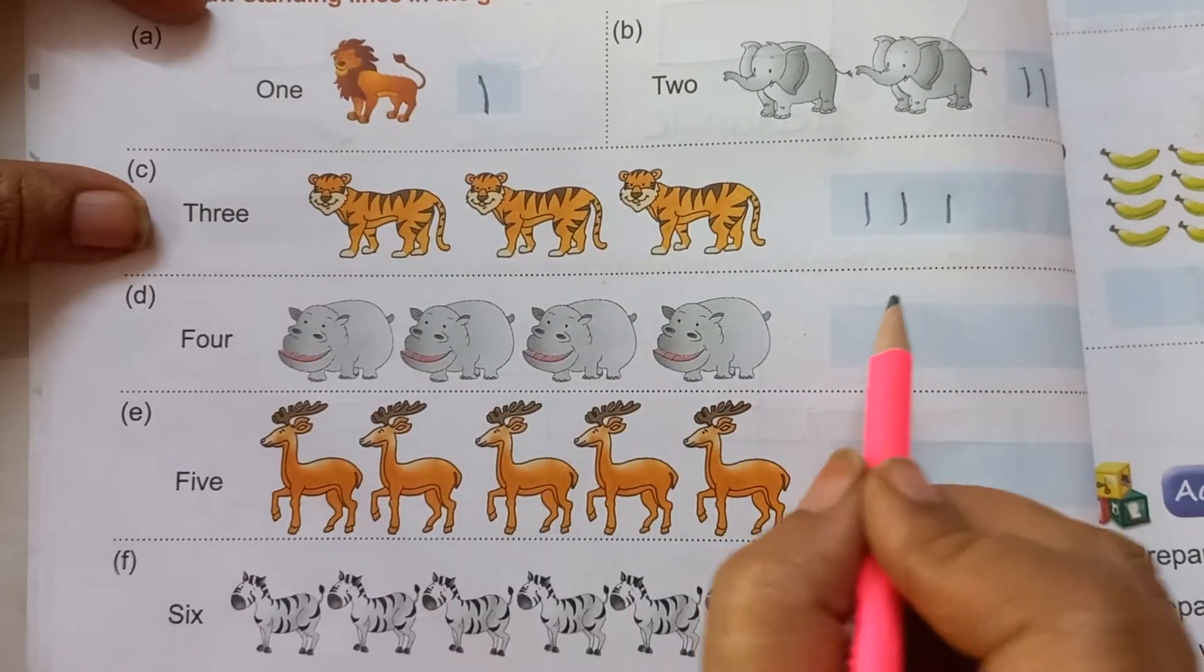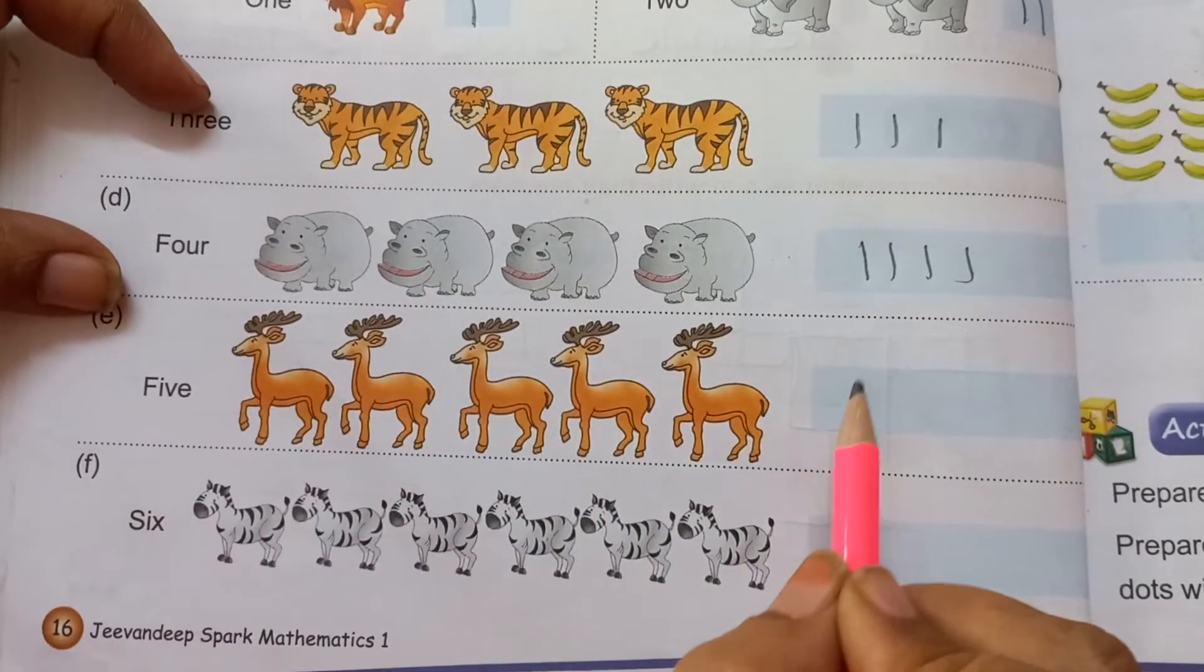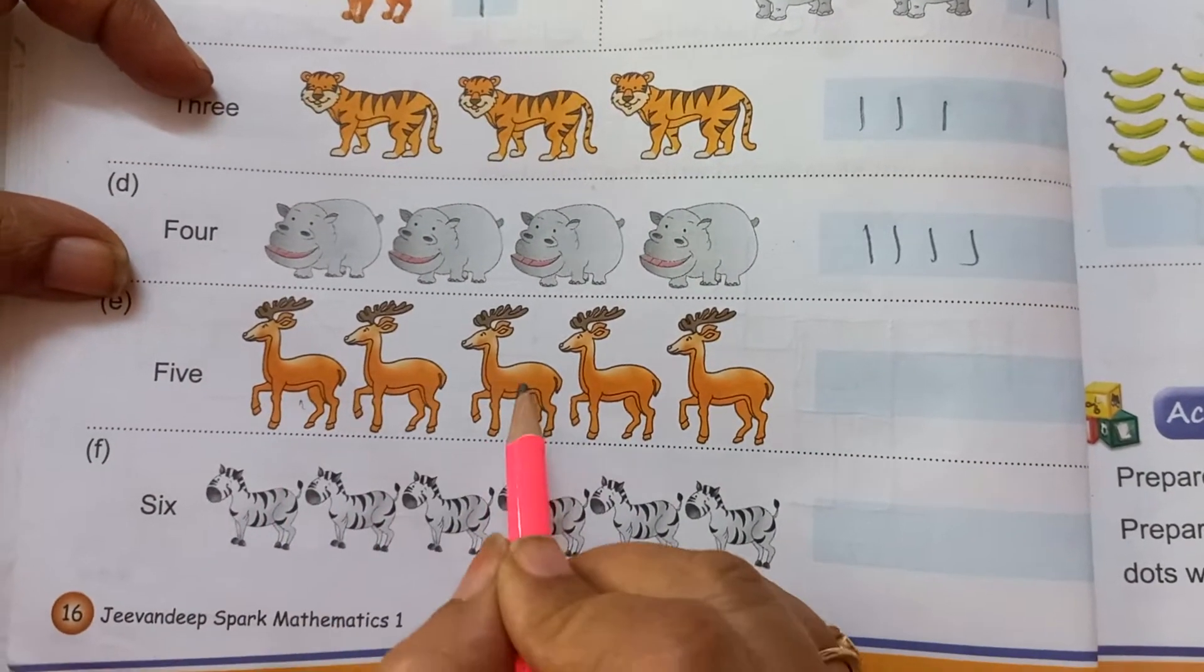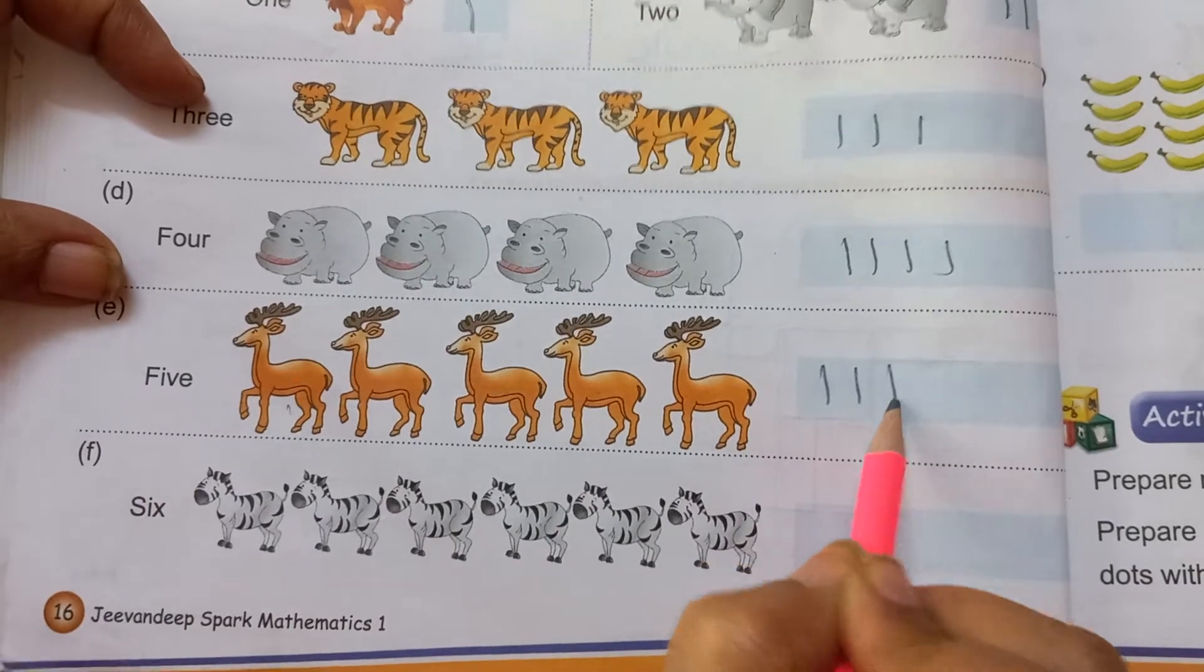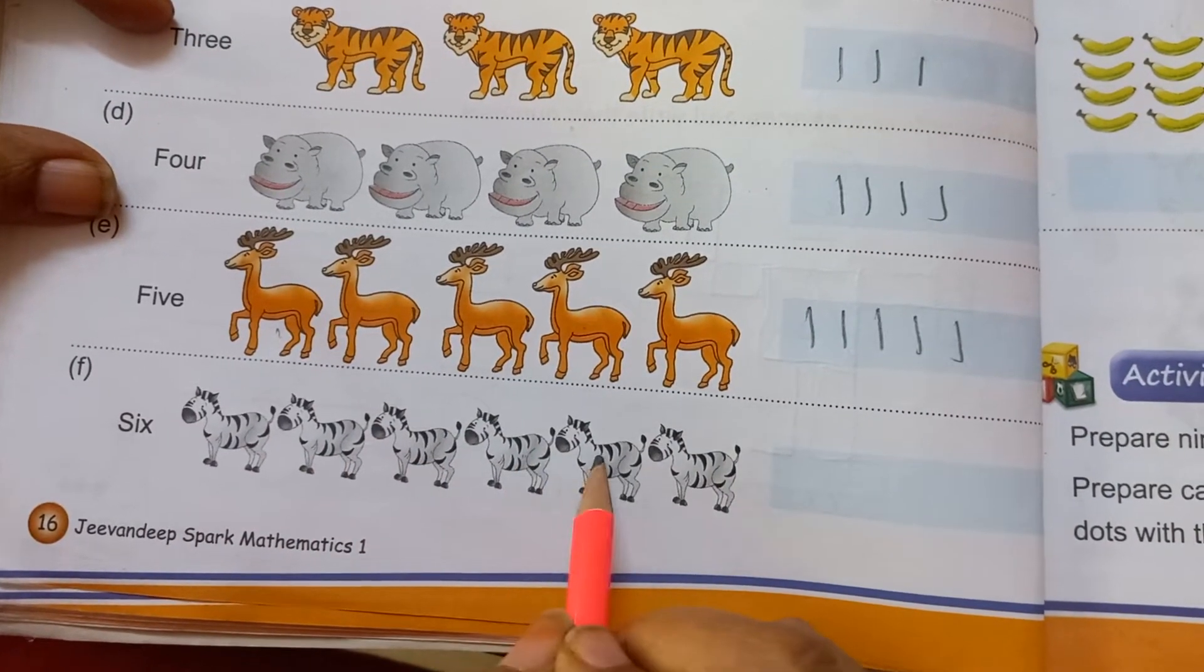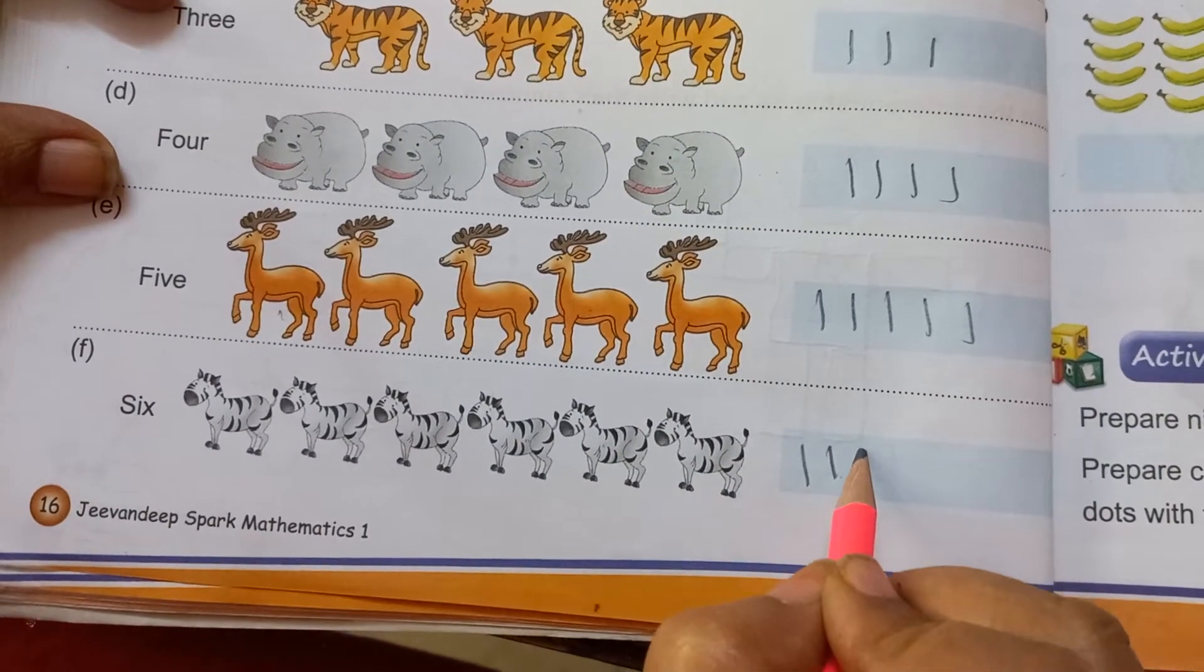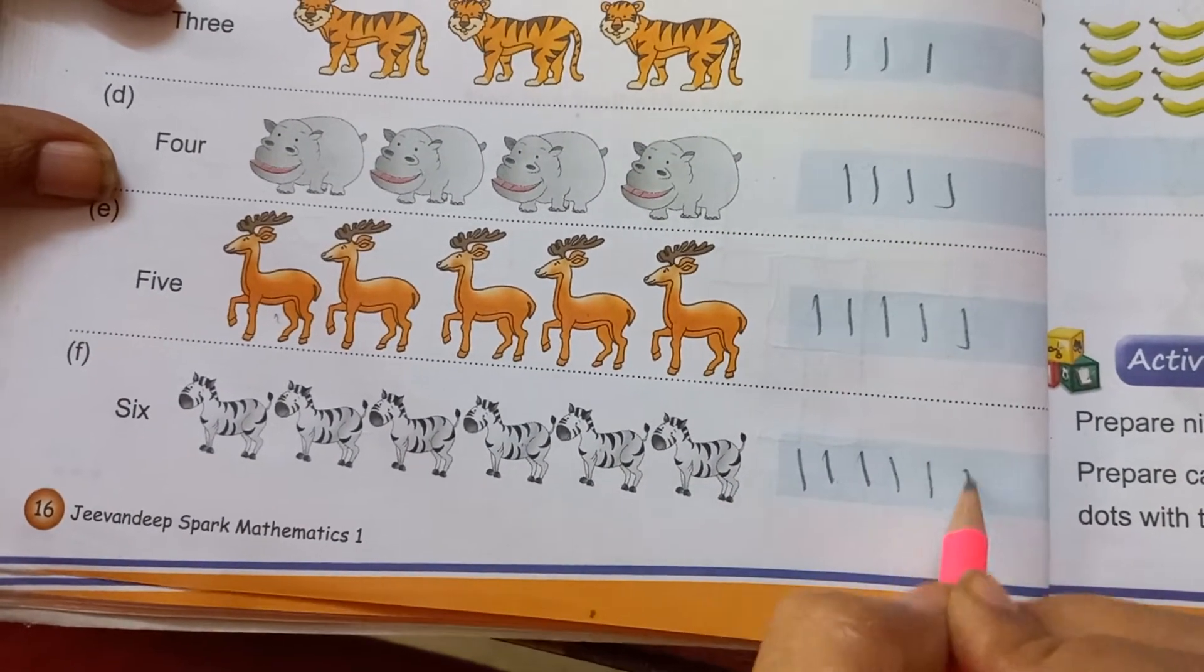Then 4. One, 2, 3, 4. Here are 5. One, 2, 3, 4, 5. So draw 5 lines. One, 2, 3, 4, 5, 6. So you have to draw 6 lines. One, 2, 3, 4, 5, 6.